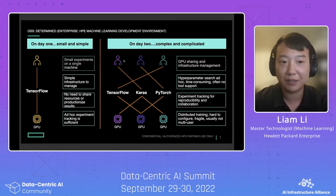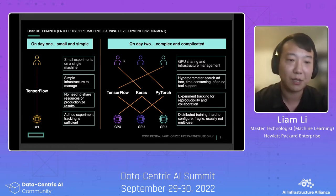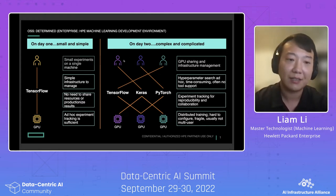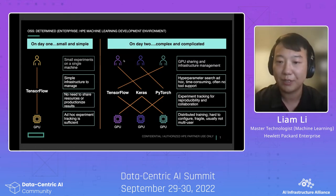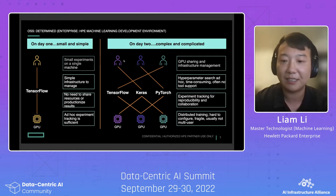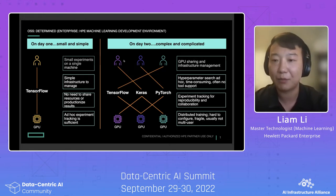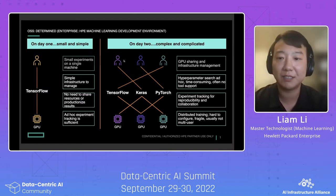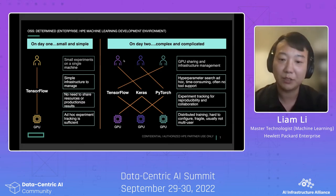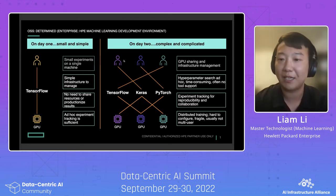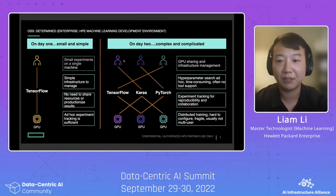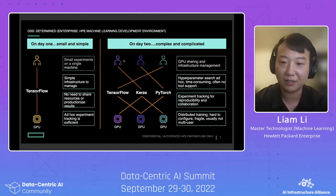On day one, if you're a single ML developer, you're working generally with small experiments on single GPUs and you don't really need a lot of the infrastructure that's really useful when you start scaling to more GPUs or when you start requiring guarantees around reproducibility and being able to collaborate with your team. So Determined is a platform that focuses on the day two of machine learning development, where you want to have infrastructure that can help you manage multiple GPUs and perform more complicated machine learning workflows like hyperparameter search, and also track all of your experiments so they are reproducible and shareable across your group.